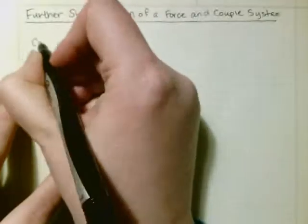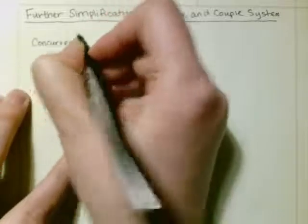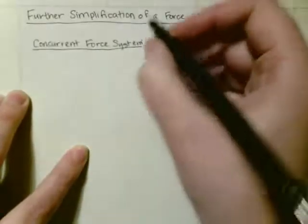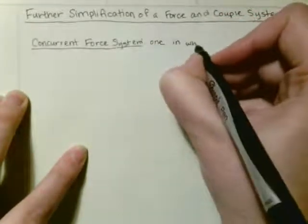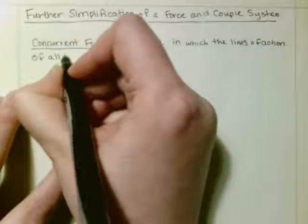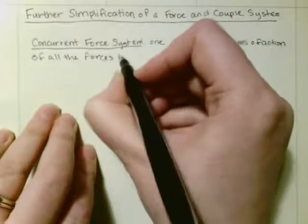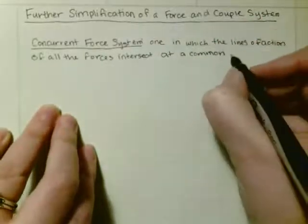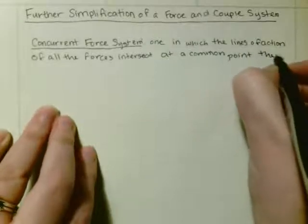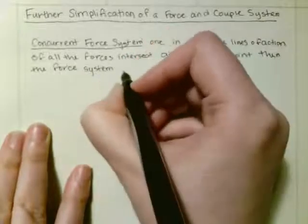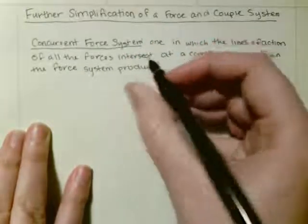So we'll start with if we had a concurrent force system. And that means one in which the lines of action of all the forces intersect at a common point. Then the force system produces no moment about this point.